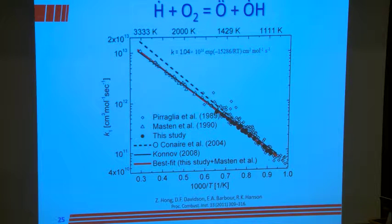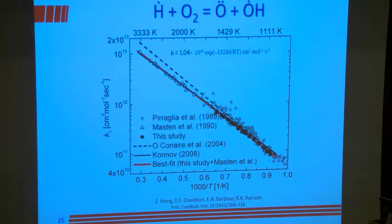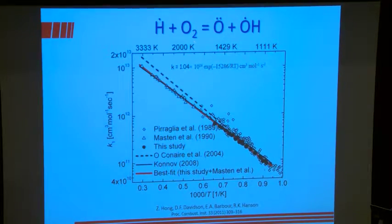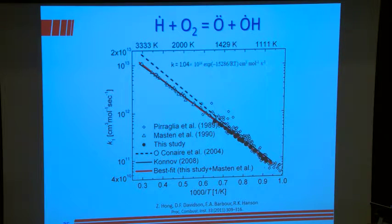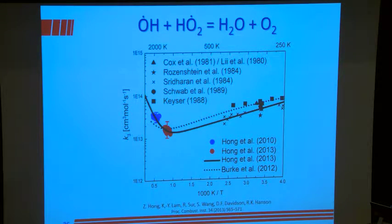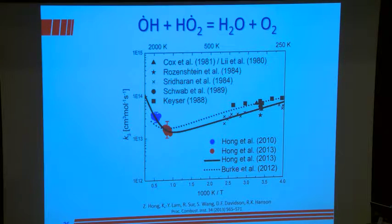This slide acts as a link, because I showed yesterday how techniques like shock tubes — as Professor Hansen's group at Stanford does — are used to measure rate constants. We've taken the rate constant measured by Professor Hansen's group for H plus O2 and used it in our mechanism, because that's the best known rate constant for that reaction in the literature. Other important reactions include OH plus HO2 giving water plus O2, whose rate constant was also published by Professor Hansen's group. Another rate constant was derived by Mike Burke at Argonne Labs, and it's very similar to what was measured at Stanford.